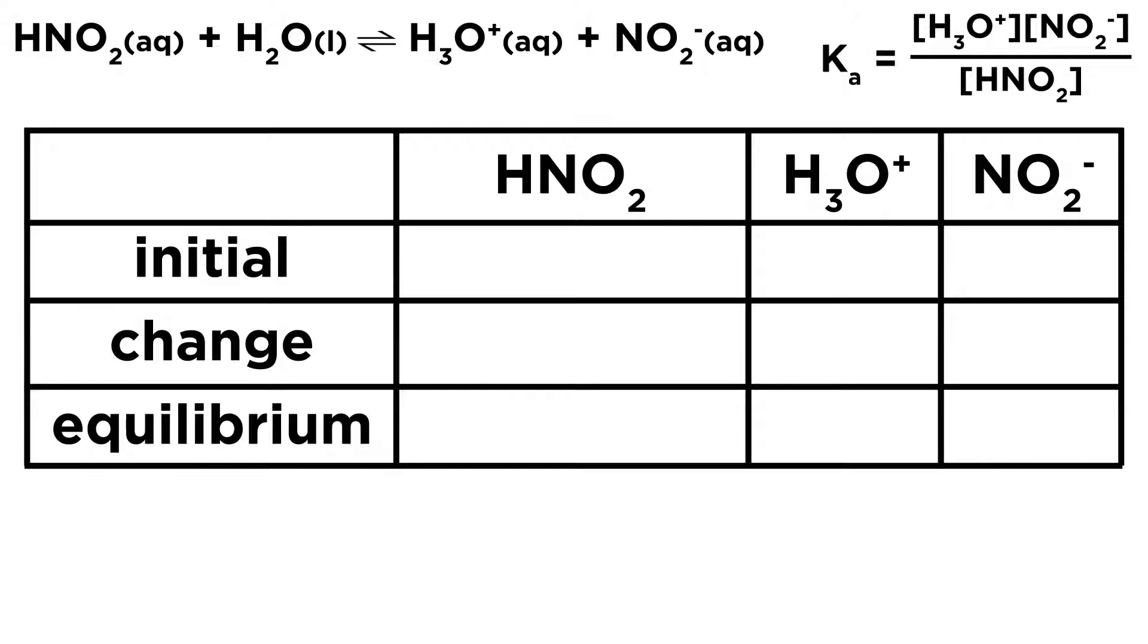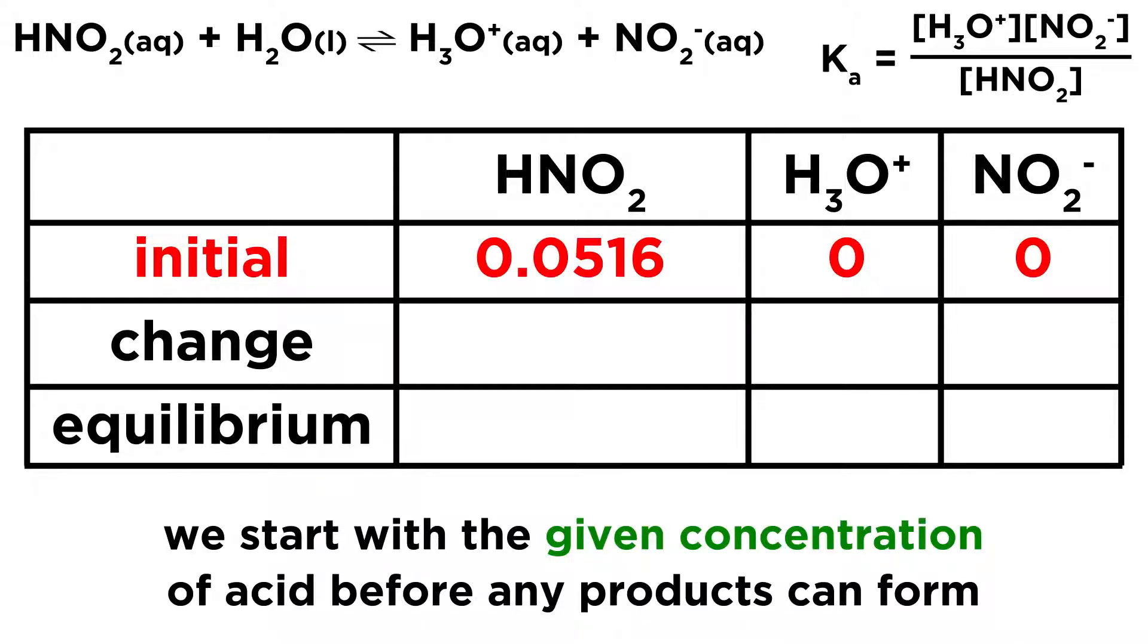And now, as we said, we're going to need to set up an icebox. So we've got our initial change in equilibrium, and then we have each of the aqueous species here. So let's start out by inputting our initial concentrations. These are the concentrations that were given, and so the only one that was given is 0.0516 for nitrous acid. So when we say that is the concentration of the acid,